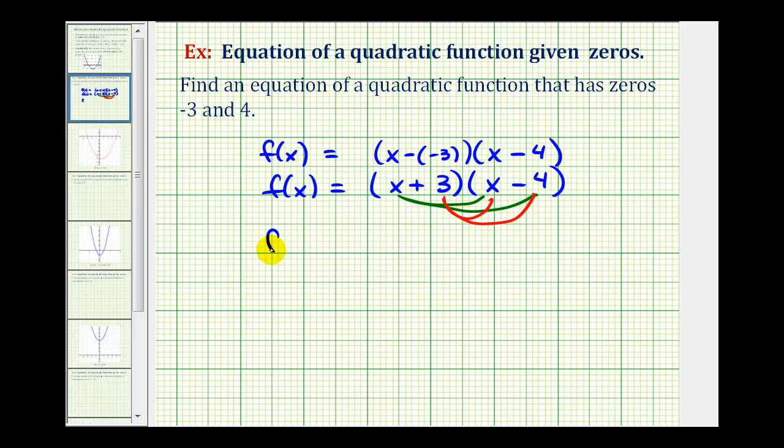So we'll have f(x) equals x squared minus 4x plus 3x minus 12.